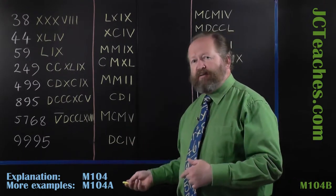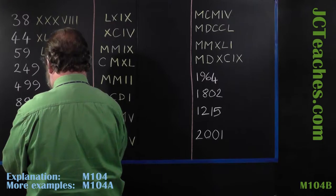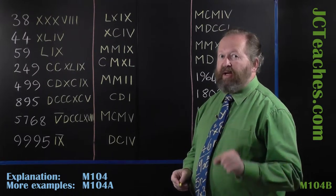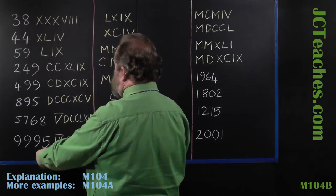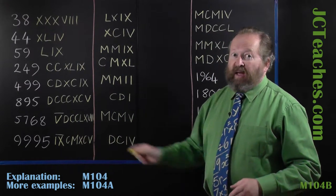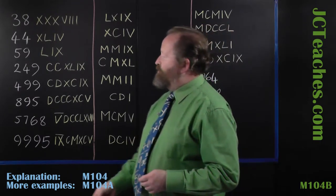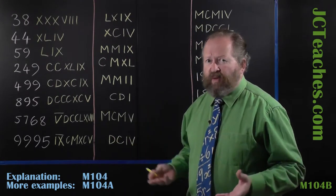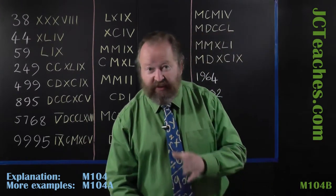9,995. 9,000, we can do a nine and we can put a bar across the top of it to be 9,000. Then we have our usual 900 which is CM, then we have 90 which is XC, then we have a V. This is quite tricky. Very rarely in Roman numerals will you be asked to do anything bigger than 5,000, because it's not something which they did very often and they had to develop this sort of cheat type fix, but you do occasionally see it.